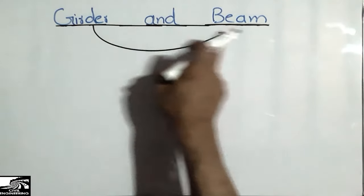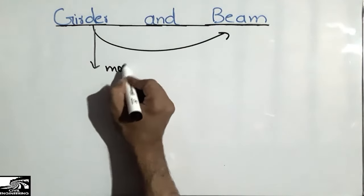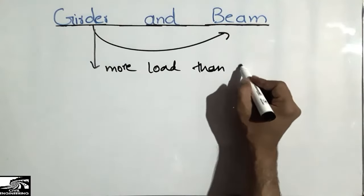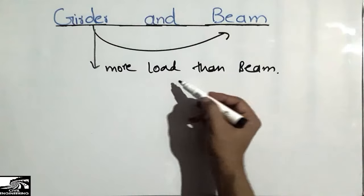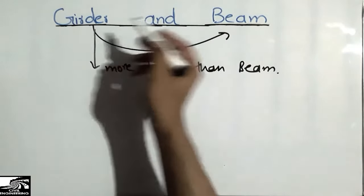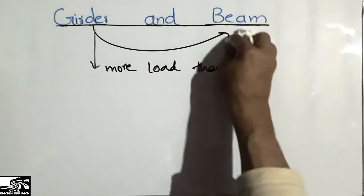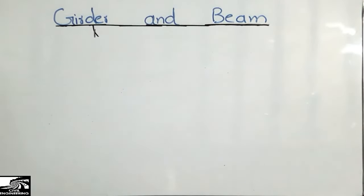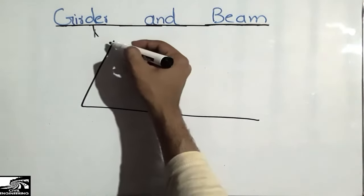A girder is a type of beam which supports more load than a regular beam in a structure. For example, I'm taking a structural example and I will show you how a girder is differentiated from the beam. Let's suppose we are taking a frame structure — any structure.